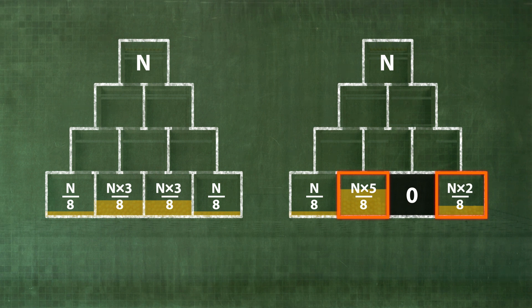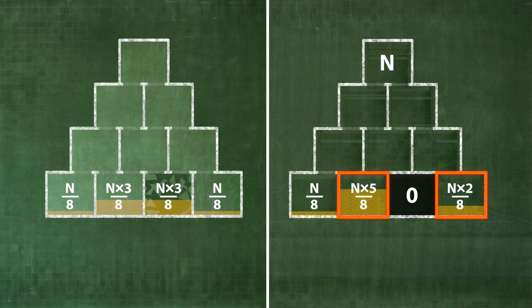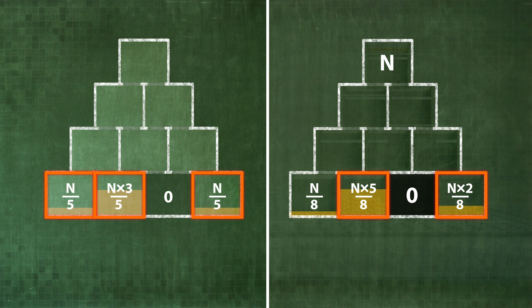A local change in the probabilities is independent of the measurement. A non-local change in the probabilities only occurs through a measurement.